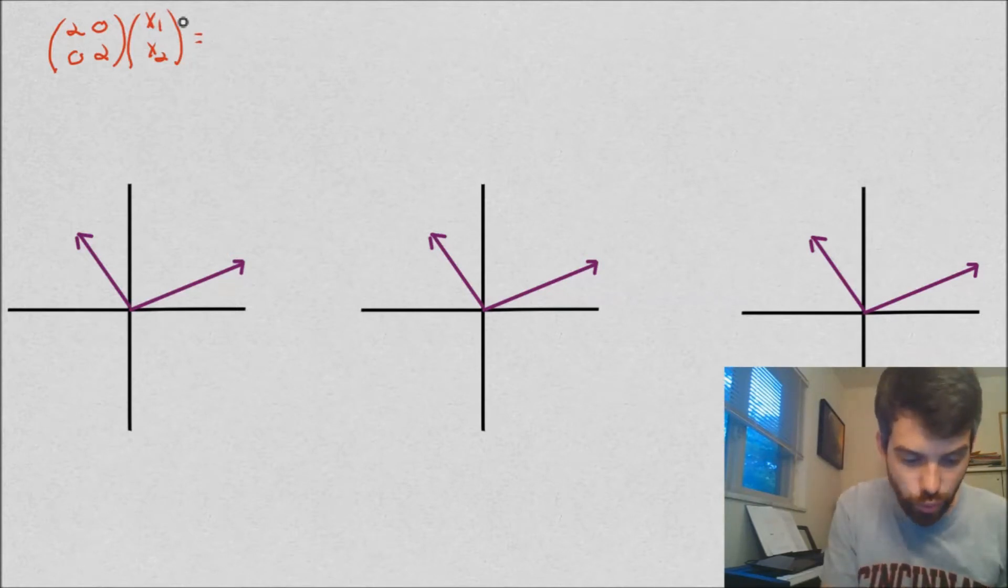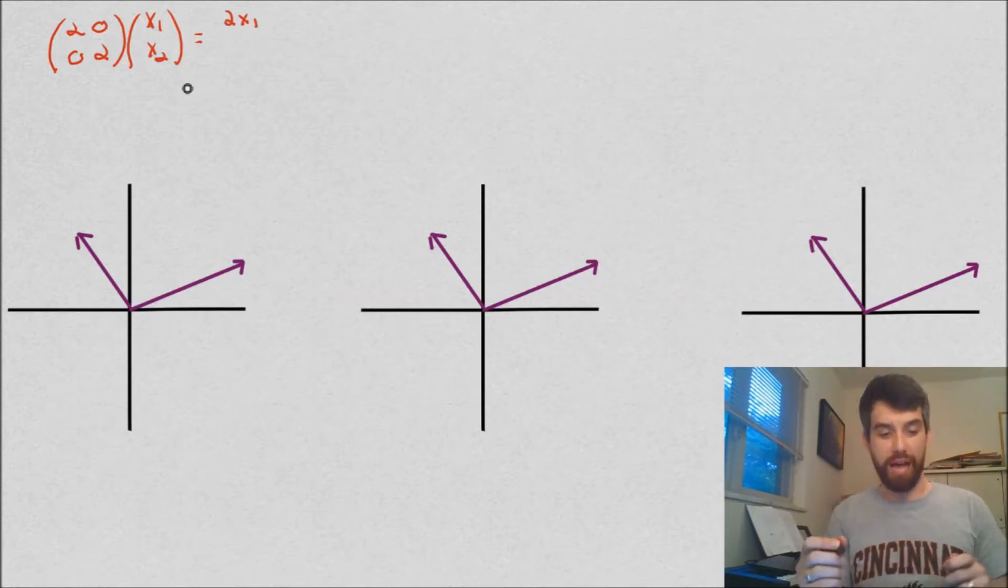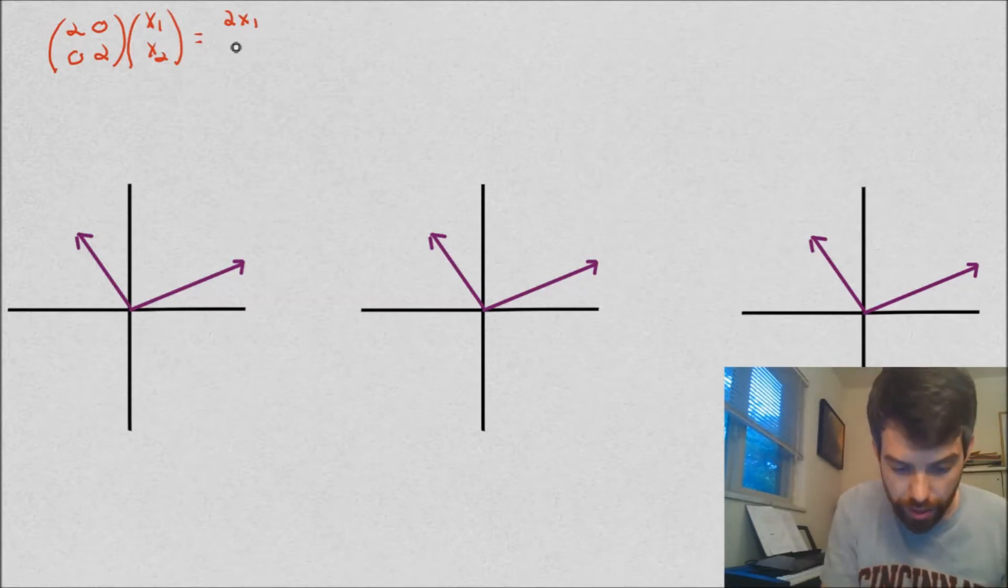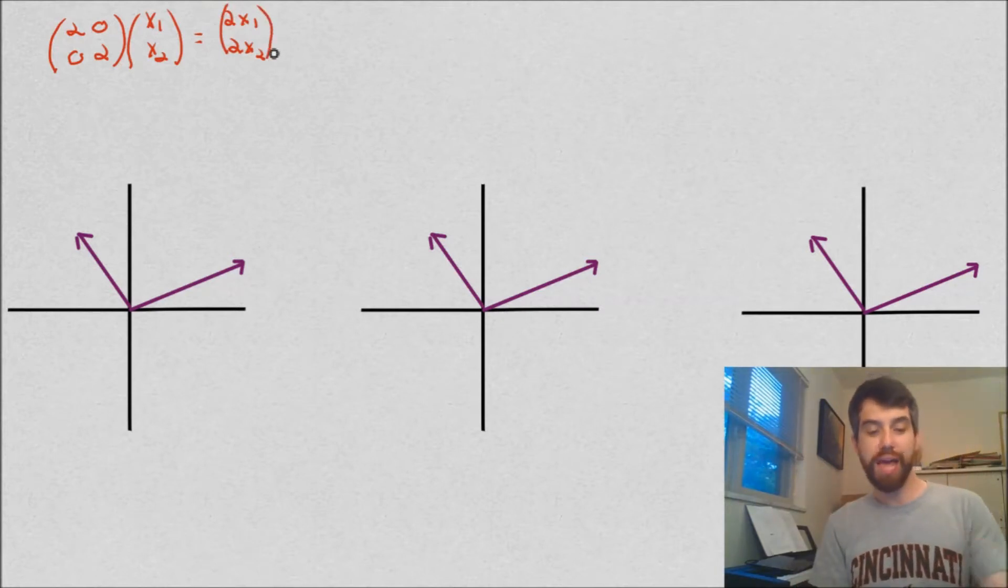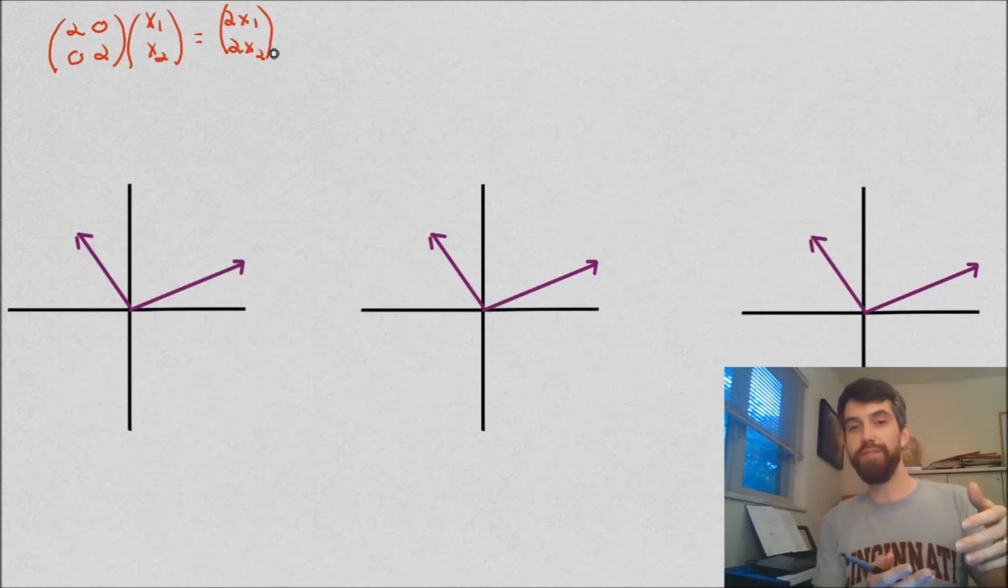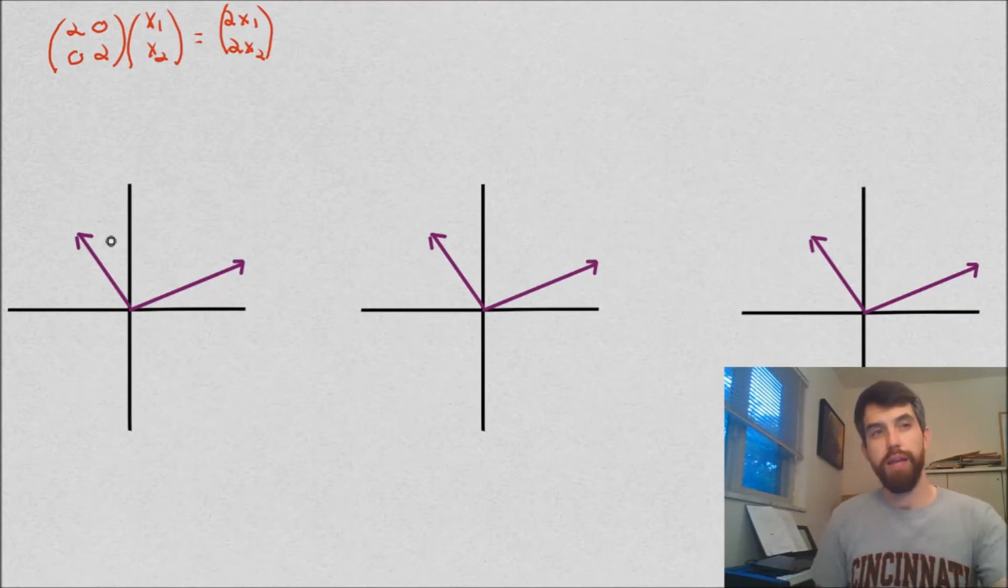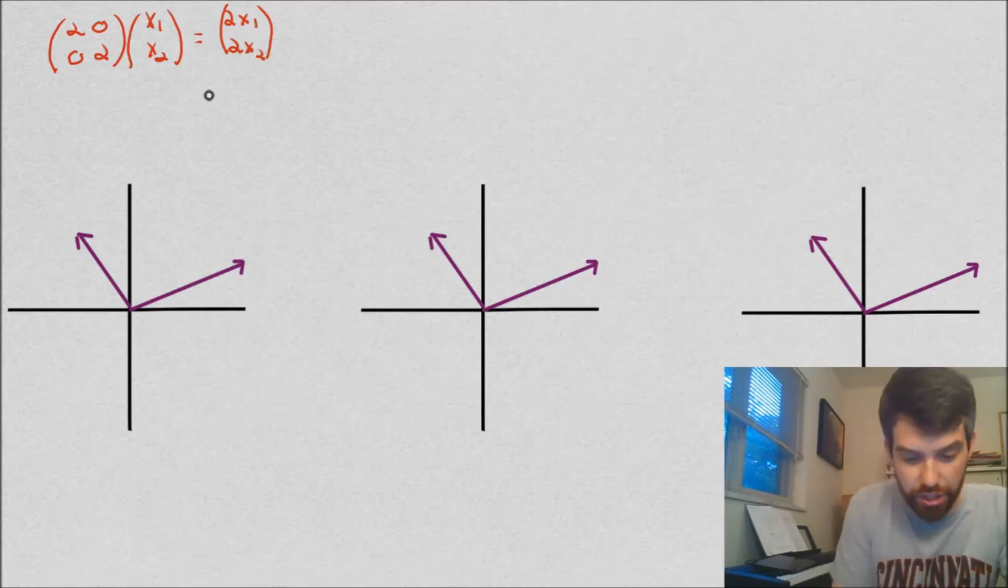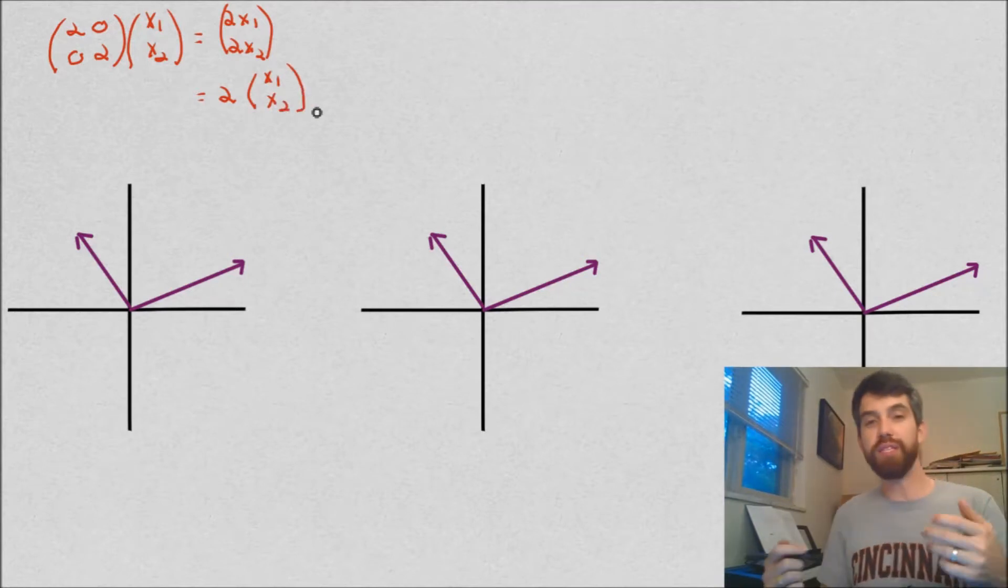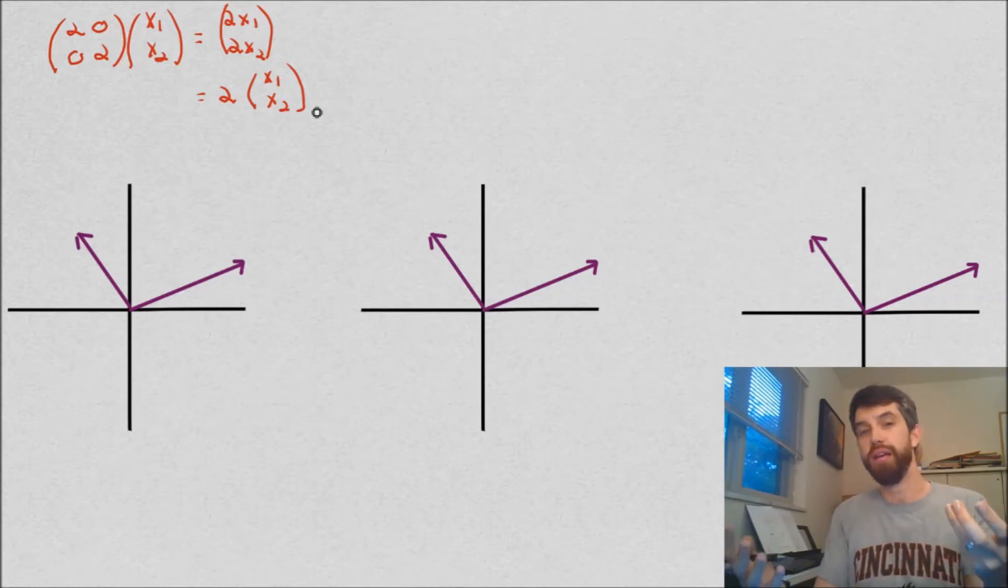So what is this? 2 times x1 plus 0 times x2, that's 2x1 on the top. And then I can do the same sort of idea, 0 times x1 plus 2x2, so 2x2 on the bottom as well. Therefore what has happened is that if my input was the vector (x1, x2), the output was the vector (2x1, 2x2). And it happens to be the case that this is algebraically the same thing as just saying twice (x1, x2). So really what this linear transformation does is it picks up an input and doubles each component in the output.